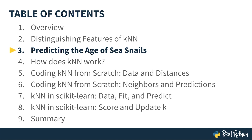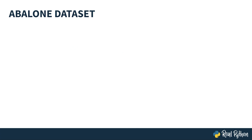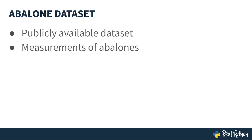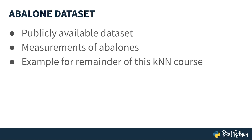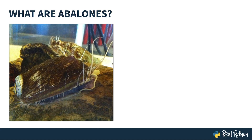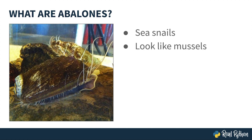Now it's time to learn about predicting the age of sea snails. The abalone dataset contains publicly available biological data with measurements of several thousand abalones. Abalones are a family of sea snails that look a bit like mussels. They're found around the world, but mostly in cold waters. The abalones in this dataset were collected near Tasmania, Australia.